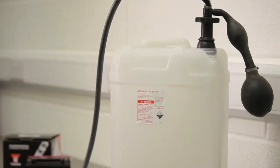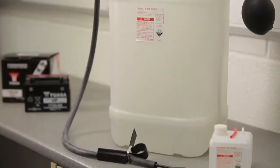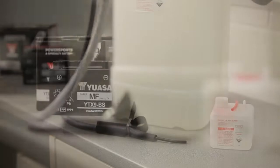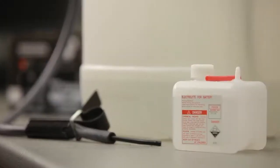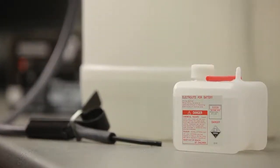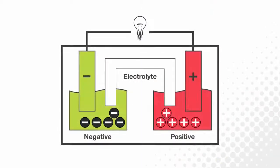A battery is an electrochemical device that converts chemical energy to electrical energy. The chemical that brings a battery to life is a solution of sulfuric acid and distilled water, called electrolyte.